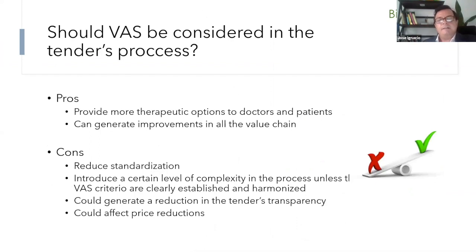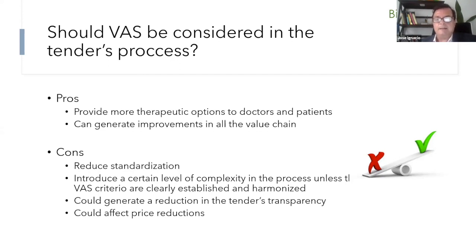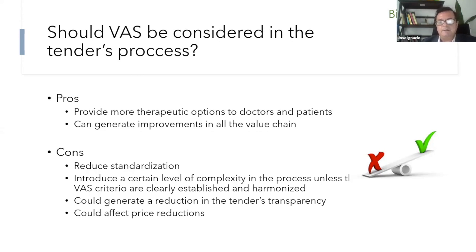The pros and cons of considering added-value services in the tender process: the pros are that it provides more therapeutic options to doctors and patients and can generate more improvement along the value chain. However, this reduces standardization — tender systems are normally very well established — and without very clear and harmonized criteria, it will be difficult to keep the level of transparency that tenders require. This can also affect the price reduction that most payers are expecting to achieve.